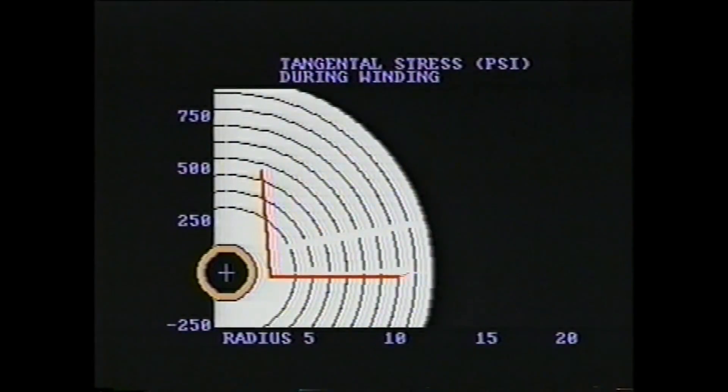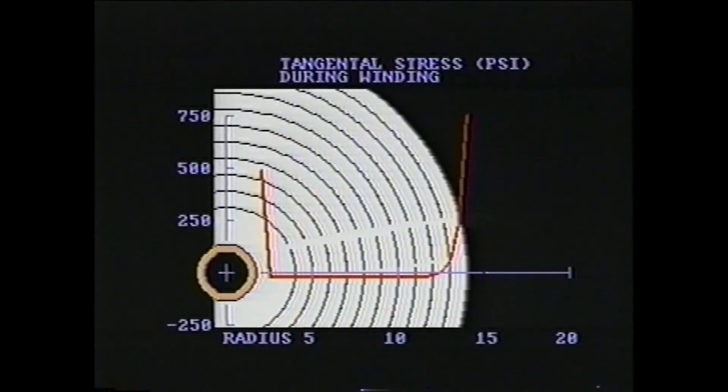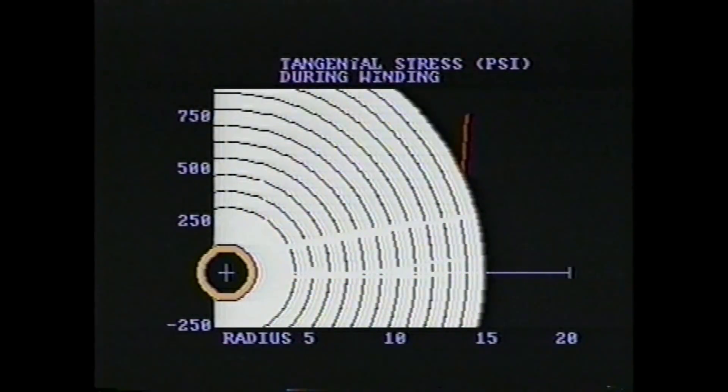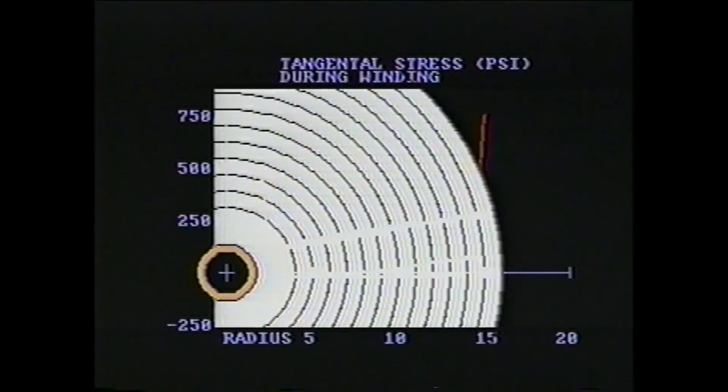Plotting the tangential stresses shown on the vertical axis against position in the roll shown on the horizontal axis, we can see the machine direction stress inside a paper roll as it is wound at an optimum constant tension. Again there is a sharp stress gradient near the core. The tangential stresses at the outside of the roll are equal to the stress at which it was wound.